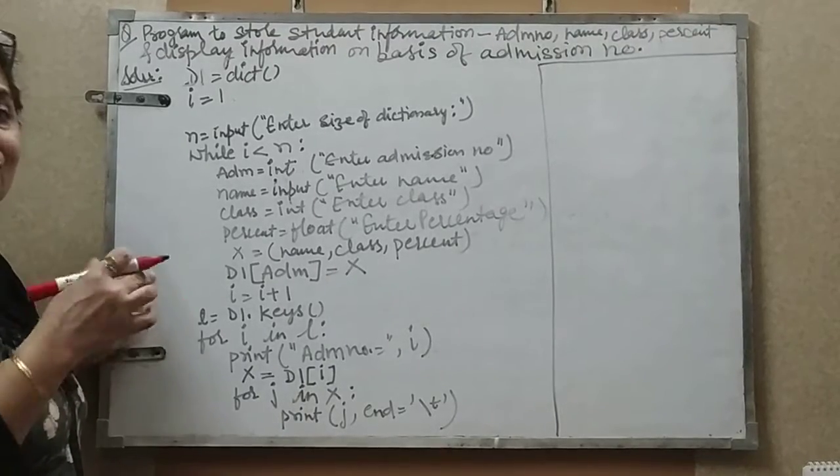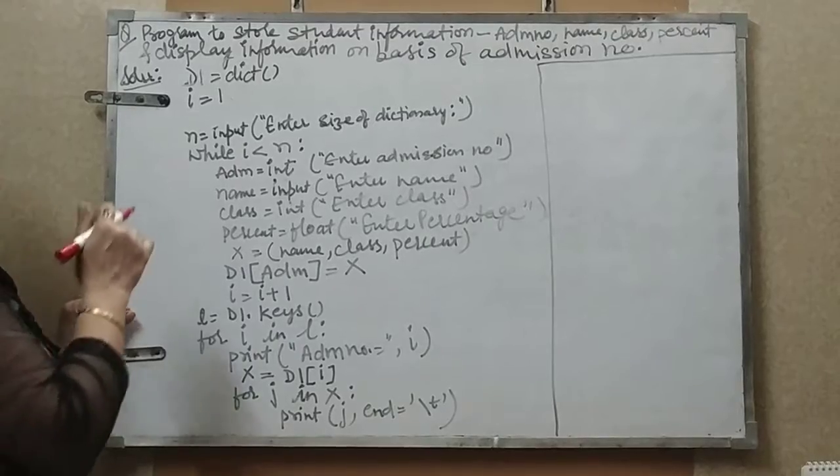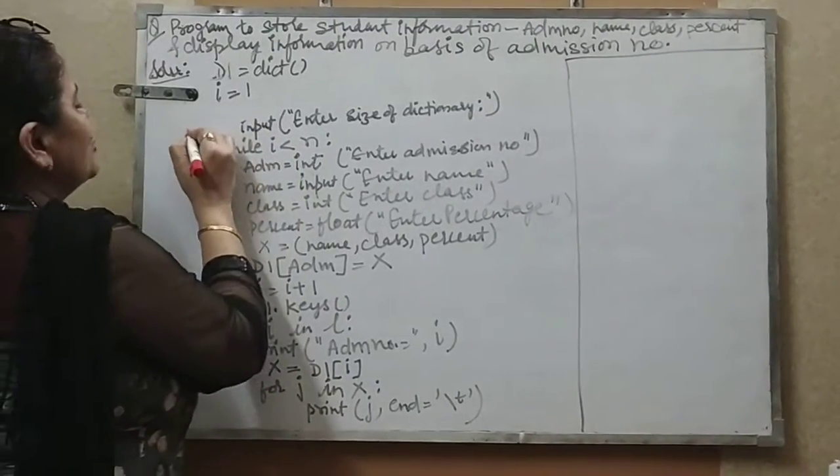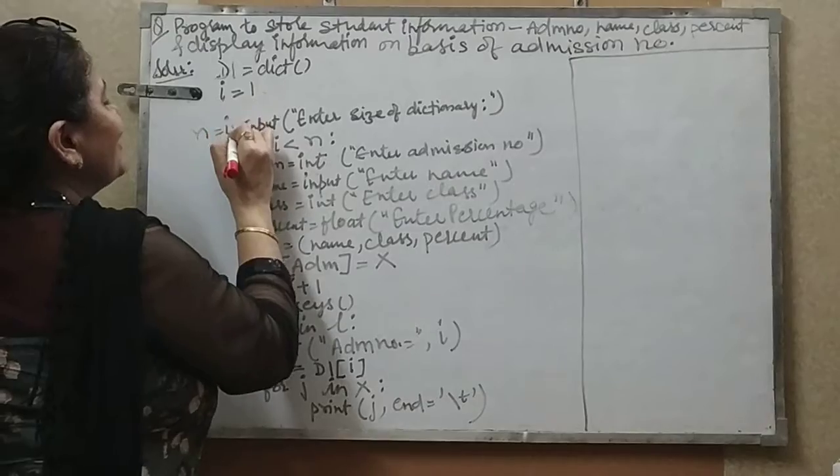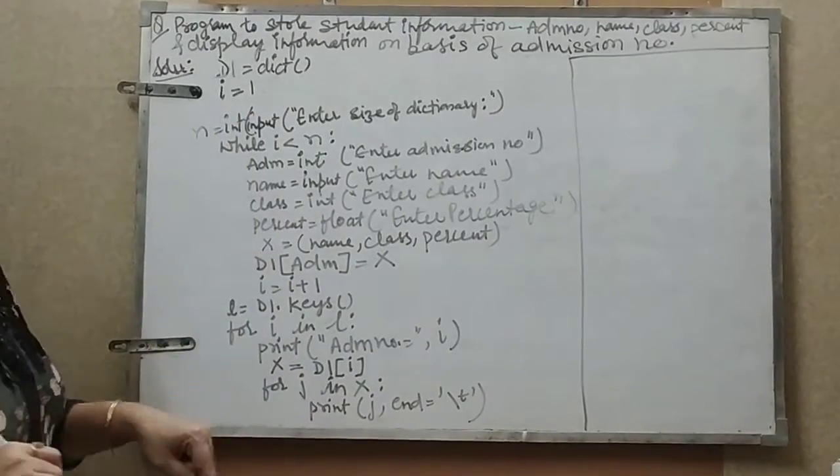How many number of entries I want to enter in my dictionary. One more thing: if I am putting the integer value, I have to write i equals int into input, enter size of my dictionary.